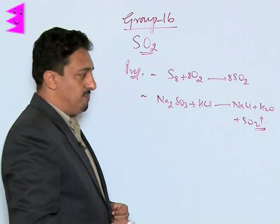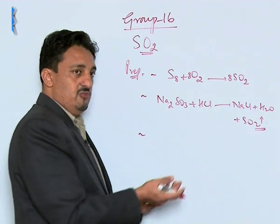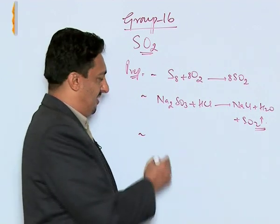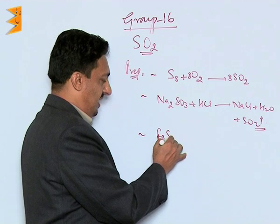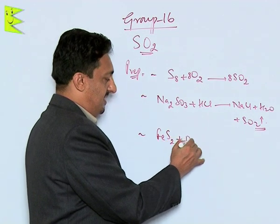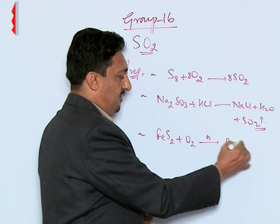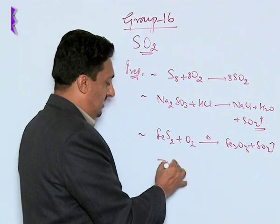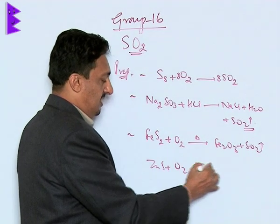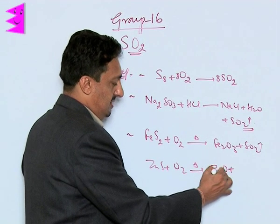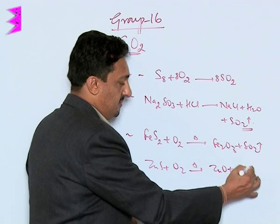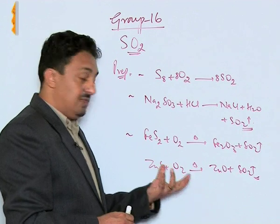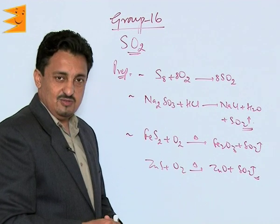SO2 is also produced during roasting in metallurgy. When iron pyrite (FeS2) is roasted, the products are Fe2O3 and SO2. Similarly, when zinc sulphide is roasted, it converts to the oxide and releases SO2. All sulphur ores produce SO2 during the roasting process.